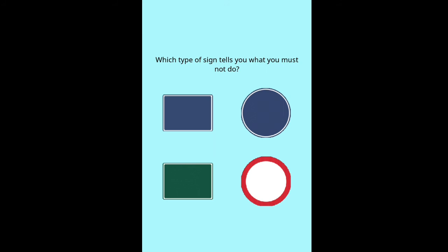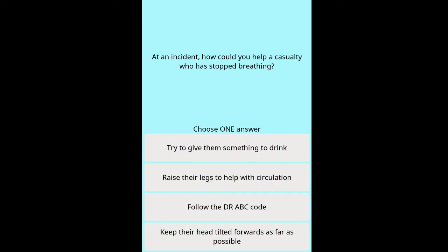Question: Which type of sign tells you what you must not do? Question: At an incident, how could you help a casualty who has stopped breathing? Options: try to give them something to drink, raise their legs to help with circulation, follow the DR ABC code, keep their head tilted forwards as far as possible.